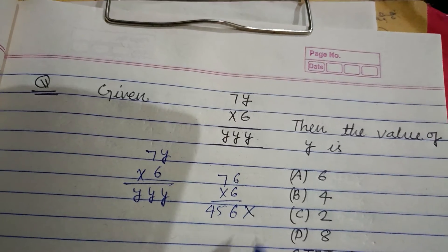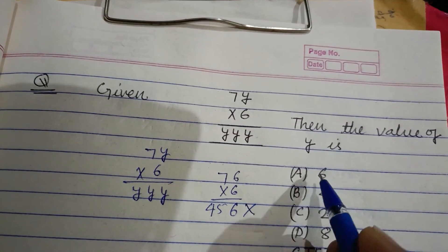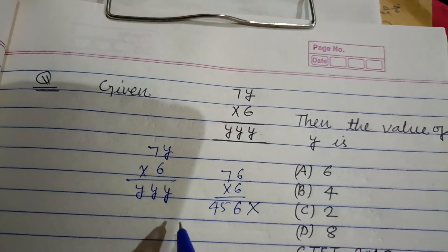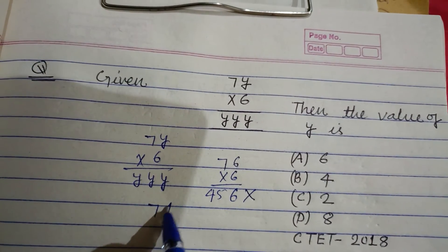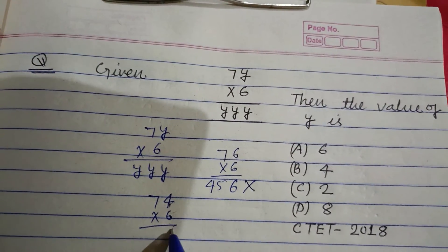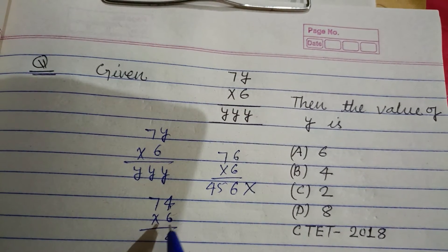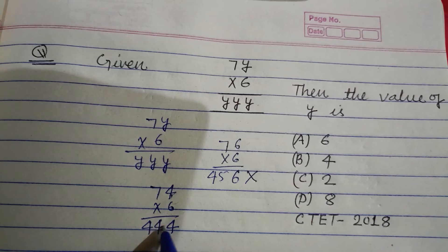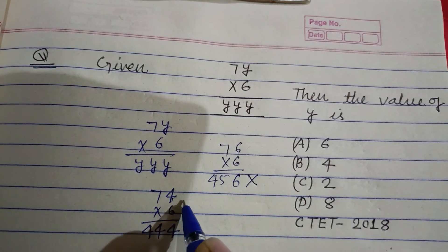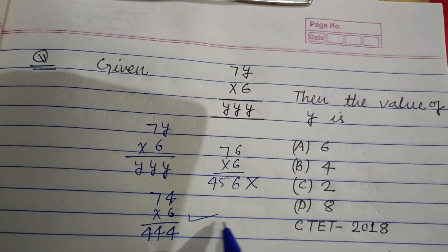Now we put 4. So 74 × 6: 6×4 is 24, 6×7 is 42, 42 and 2 is 44. This gives 444. So this is the required result - y should be 4.